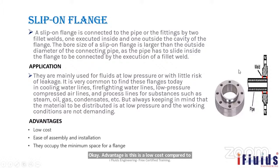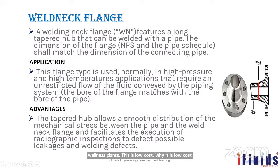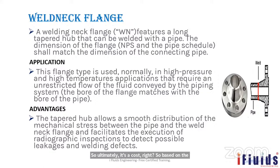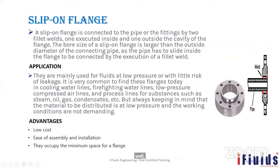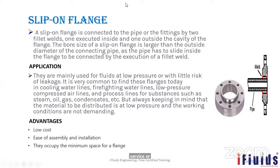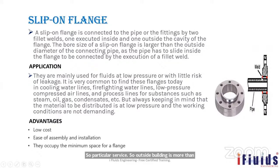The material cost is lower for slip-on flanges than weld neck flanges. You can also do internal fillet weld if required, but for water or air service, the external weld is sufficient. A disadvantage is that you cannot perform RT on the fillet weld — only dye penetrant test (DPT) can be done on this type of joint.